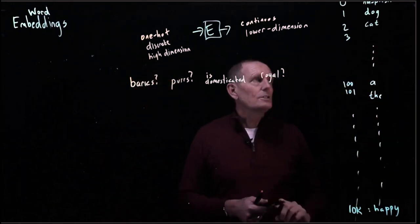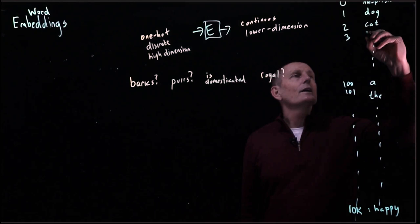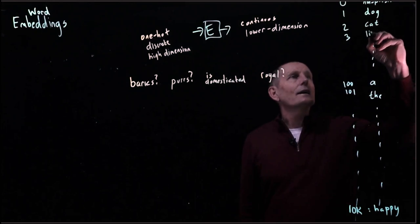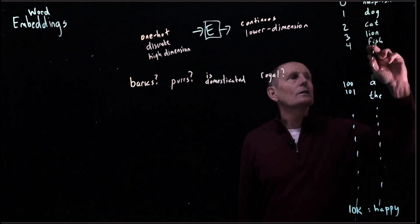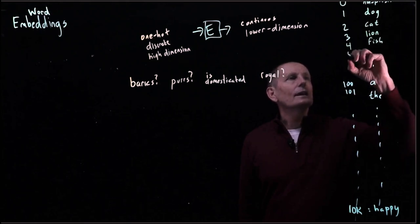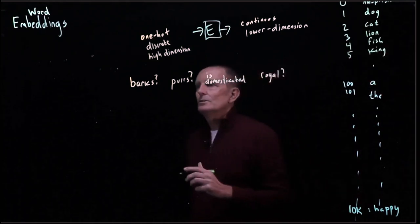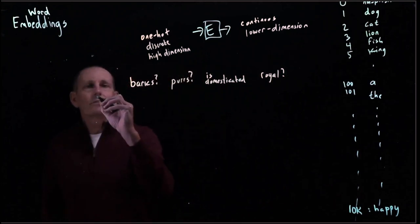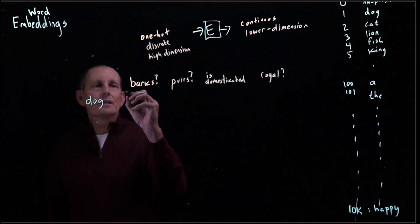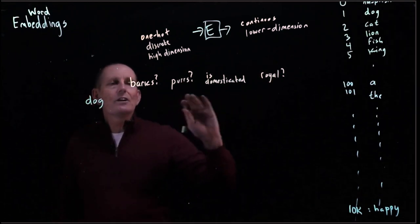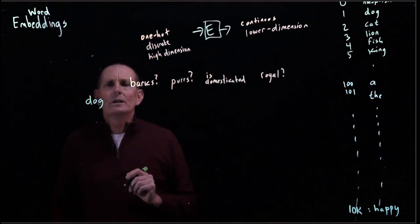And let's just look at some particular possible entries. I'm going to make this be dog, cat, lion, fish, king. So let's go ahead and look through. For instance, for a dog, let's imagine we want to fill in some values for this. Let's just make them between zero and one.